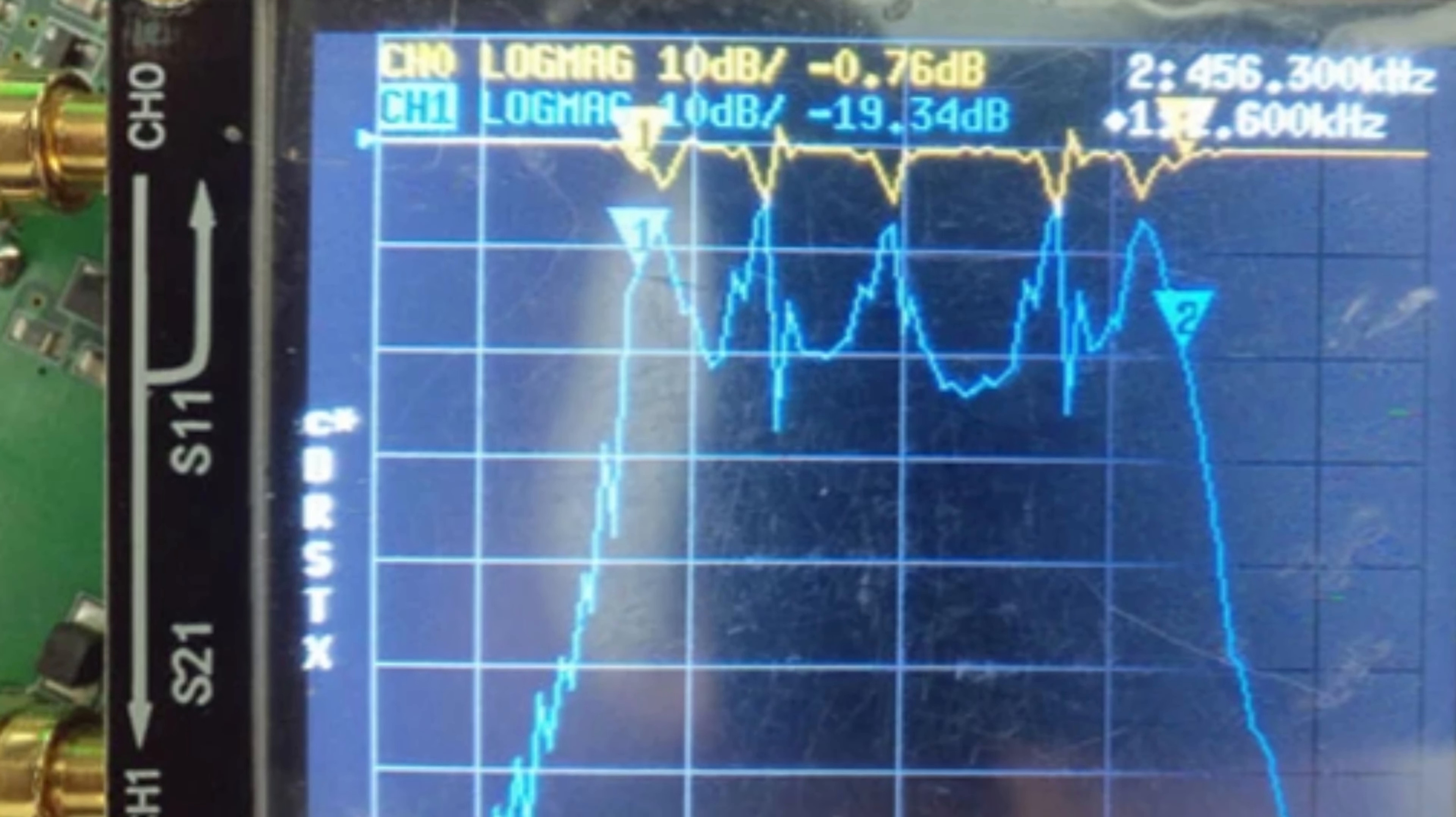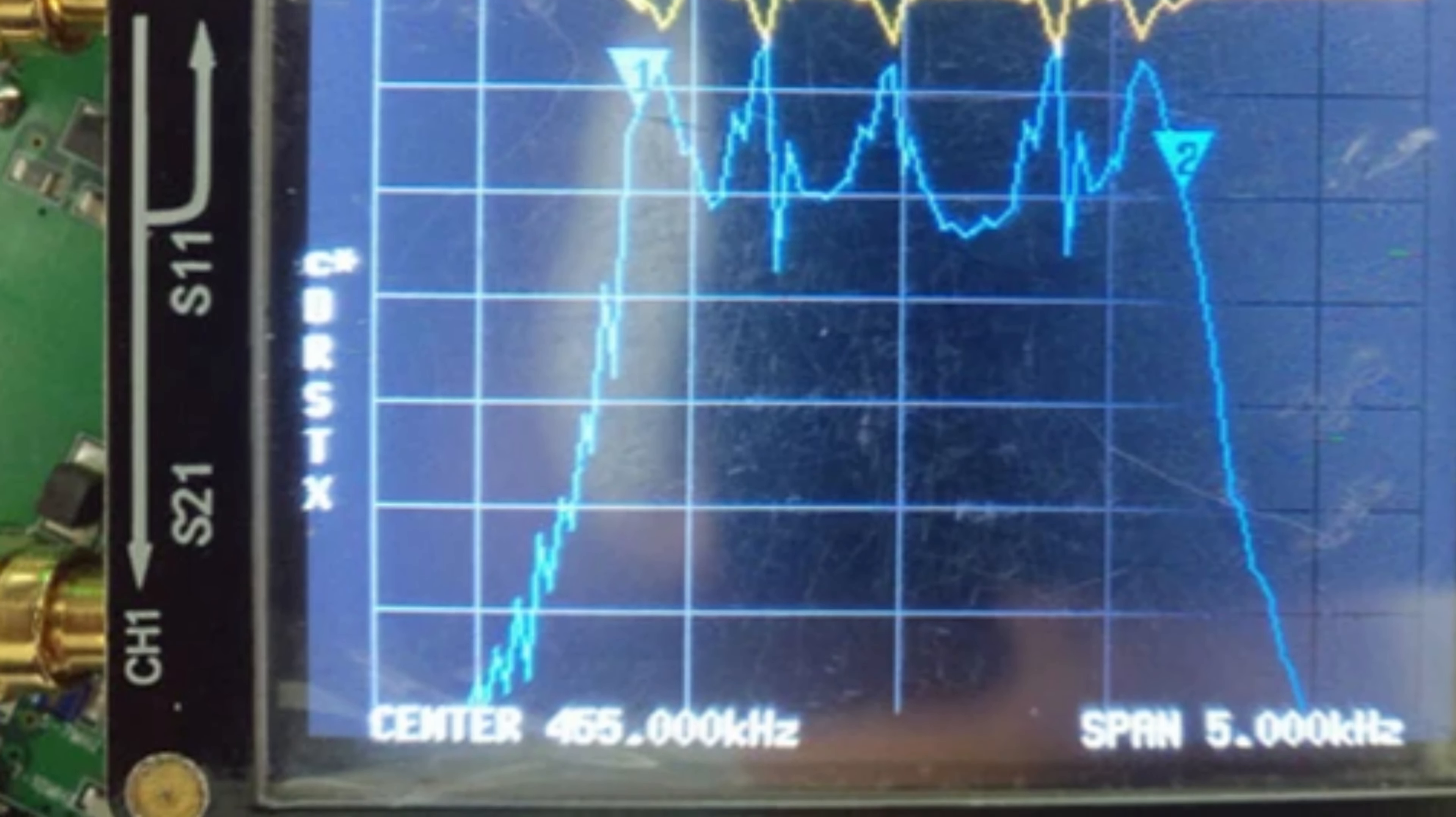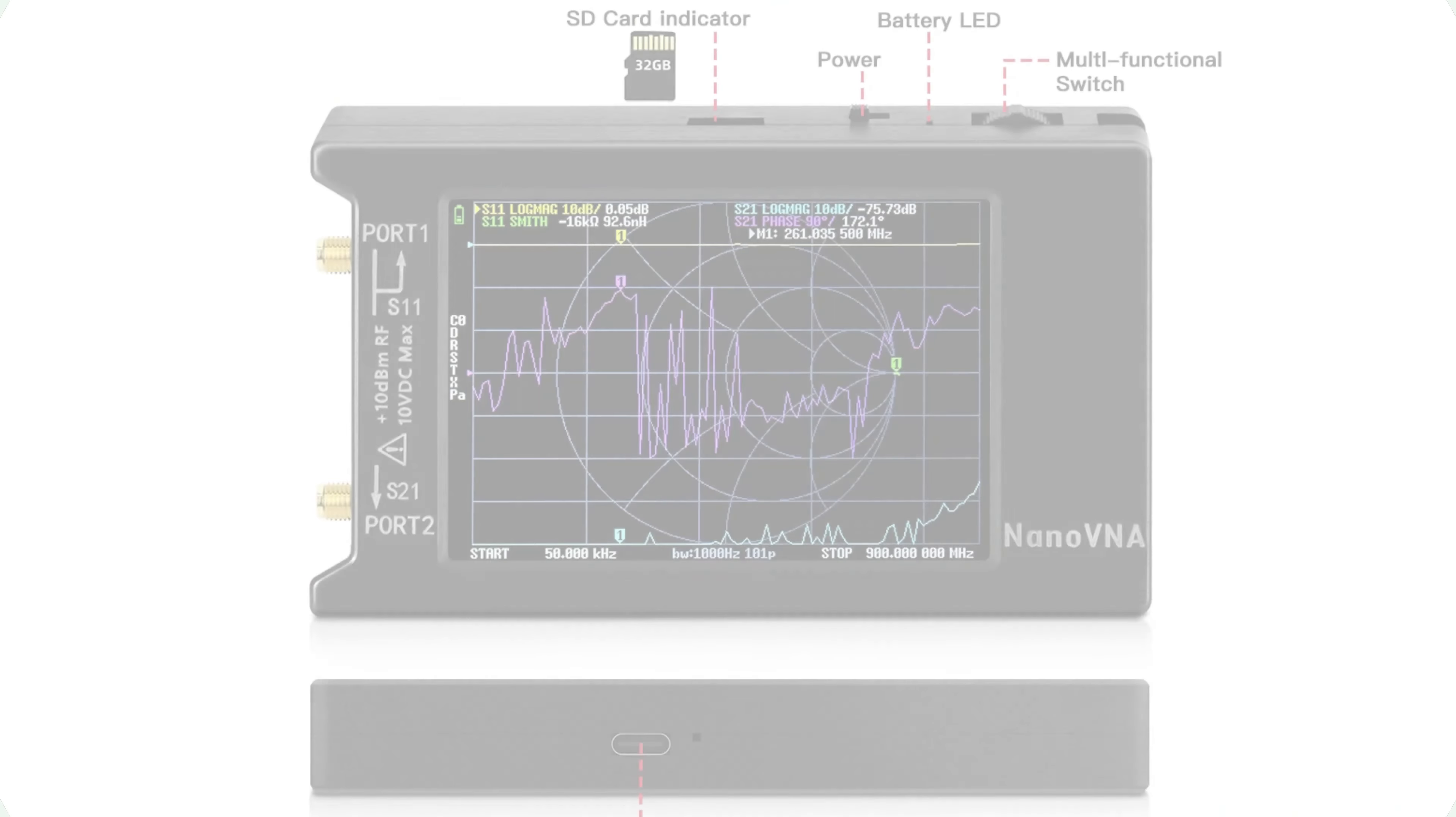It covers a wide measurement frequency range from 50 kHz to 1.5 GHz, allowing for analysis of various antennas and RF components.